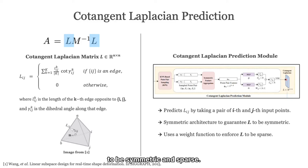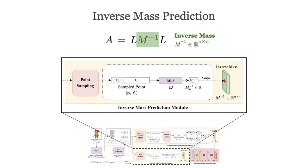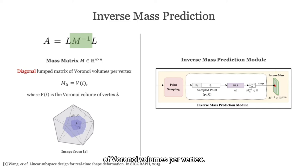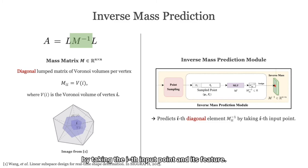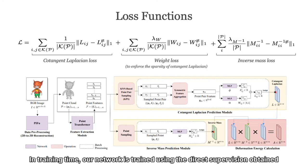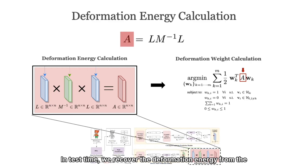Next, we learn the inverse mass. The mass matrix M is a diagonal lumped matrix of Voronoi volumes per vertex. Thus, our inverse mass prediction module is designed to predict the i-th diagonal element in the inverse mass by taking the i-th input point and its feature. In training time, our network is trained using direct supervision obtained from the ground truth mesh topology. In test time, we recover the deformation energy from the predicted cotangent Laplacian and inverse mass to compute deformation blending weights with user-specified control handles.